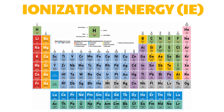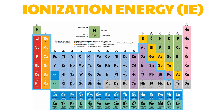Generally, metals are the ones that tend to lose electrons and become positively charged ions. They are called cations. Atoms that lose an electron in their outermost shell carry a positive charge because by losing electrons, the number of positively charged protons exceeds those of the negatively charged electrons.